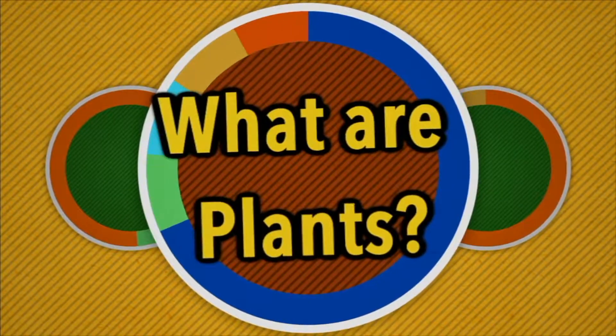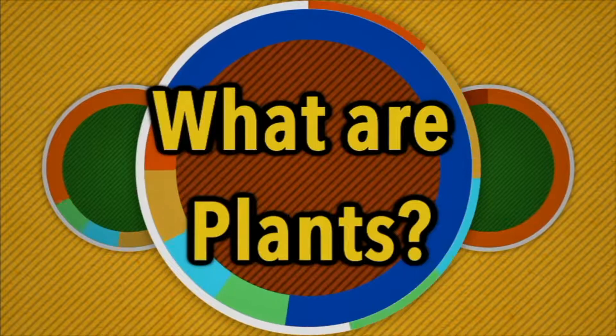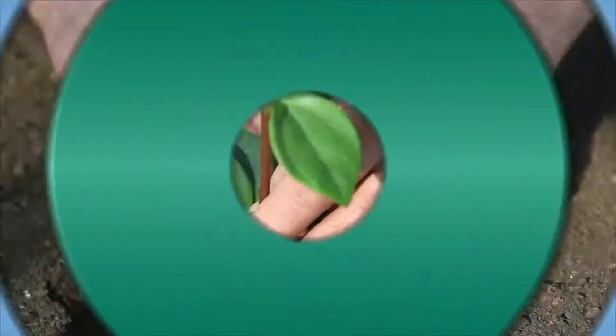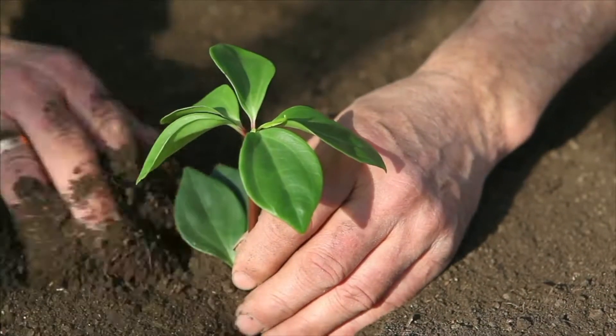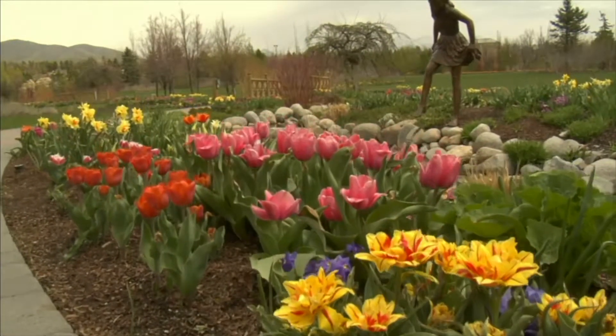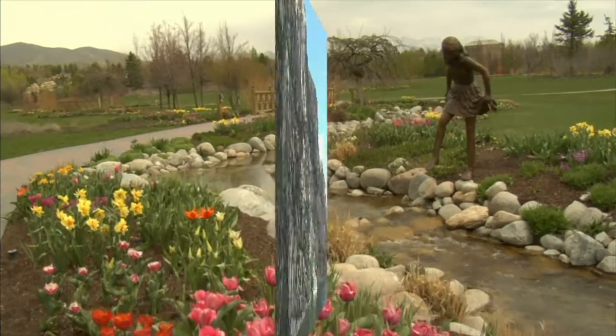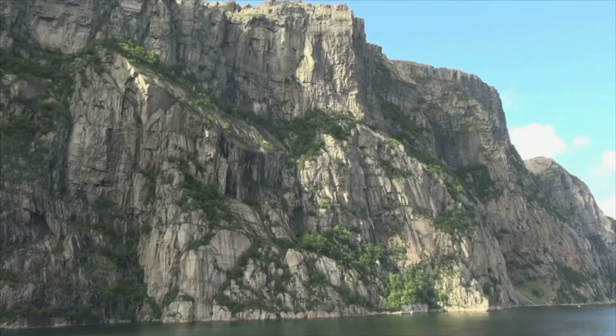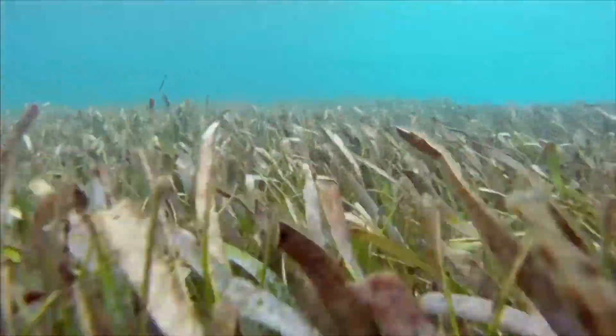What are plants? Plants grow just about everywhere. You find them in gardens, in parks. They grow on mountainsides and around lakes. Plants grow in water and underwater too. Plants are everywhere, and that's good because people use plants every day for all kinds of things. Can you think of ways people use plants?